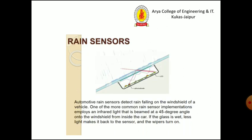The rain sensor detects rainfall on the windshield of a vehicle. One of the common rain sensor implementations employs an infrared light that is beamed at an angle on the windshield from inside. If the glass is wet, less light makes it back to the sensor.